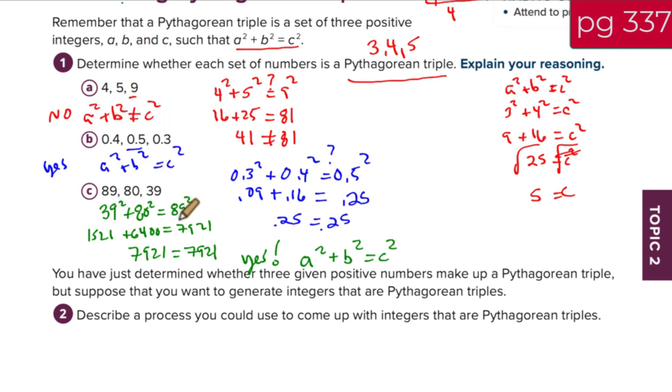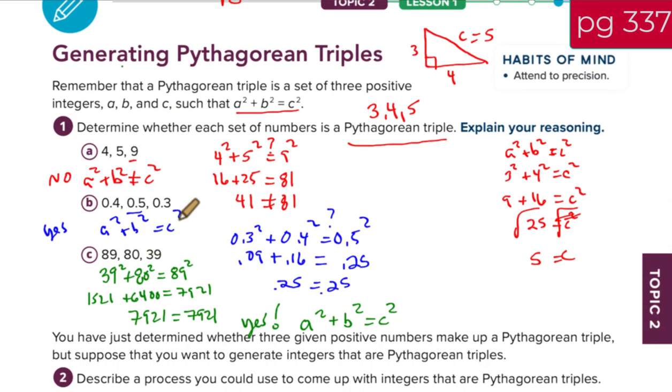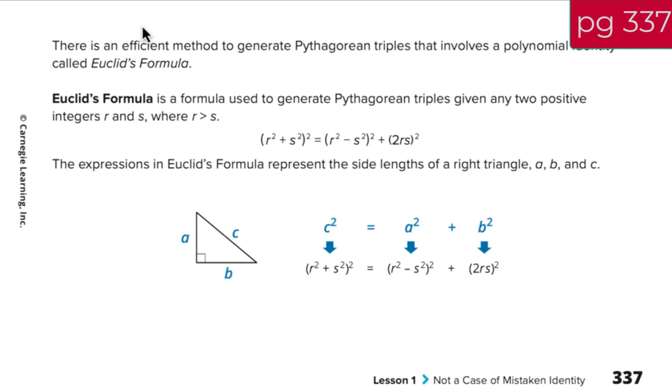So the question is, how can we figure out sets of Pythagorean triples? How do we know when they work? Well, that's what today's lesson is about. You might be wondering, why are we going back to these Pythagorean triples? It's about identities. So here's an identity from a guy named Euclid. Now, Euclid was an ancient Greek mathematician. And some people call him the father of geometry. He did a lot of work in geometry.